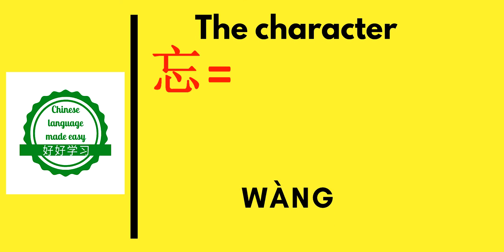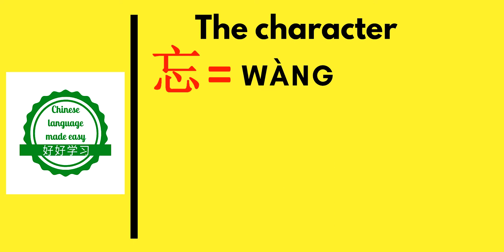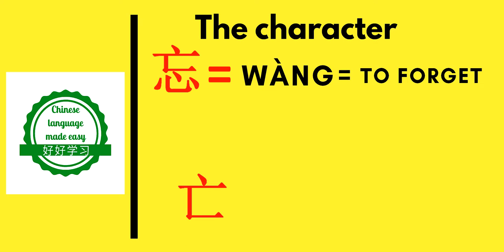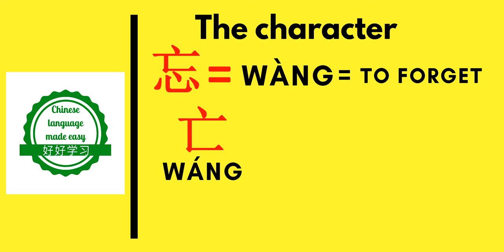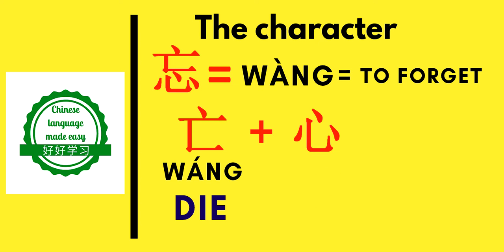The first character today is the character 忘 (wàng). Wàng in Chinese language means to forget something. It is made of two characters: one above and one below. The one above is 亡 (wáng), with the second tone, and it means to die or death. The second one is 心 (xīn), which means heart.